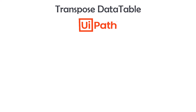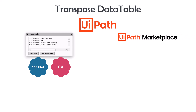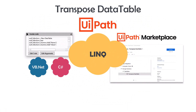Transposing a data table in UiPath is needed in some cases. But what does transpose data table mean, and how to do that? There are different ways to do it in UiPath — either using invoke code activity and writing code in VB.NET or C#, or using custom activities which you can import from the UiPath marketplace. But we can also do the same using a very simple LINQ query. In this video I will show you how to transpose a data table using a LINQ query.